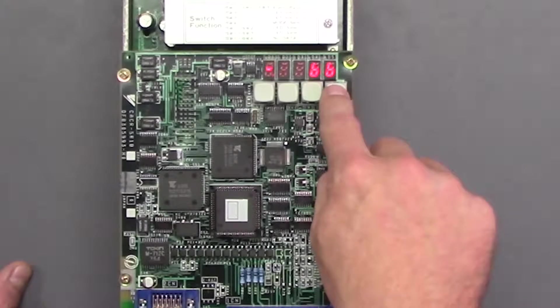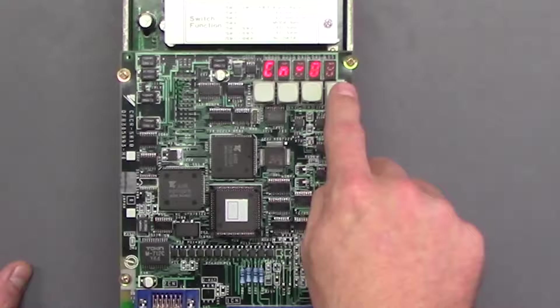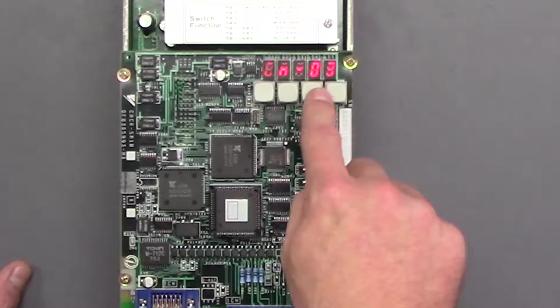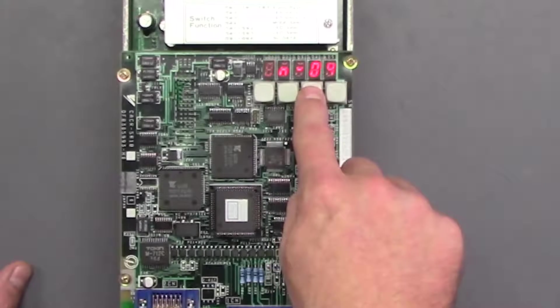So let's go ahead and press switch number 4 and now we're at CN03. Now to move up to CN4 you're going to press switch 2, and to go back down you're going to press switch 3.